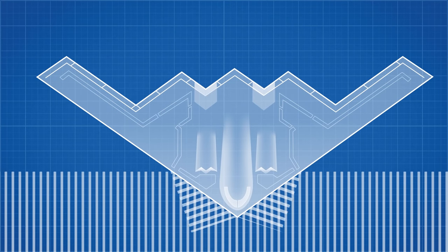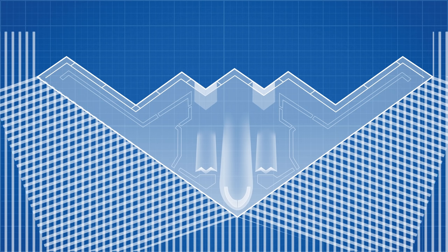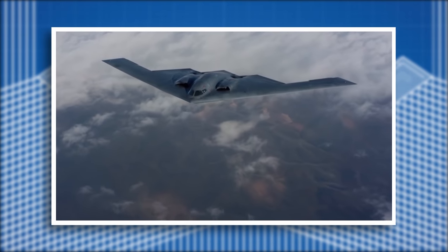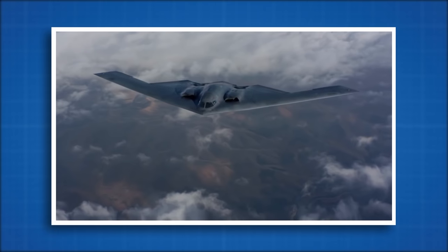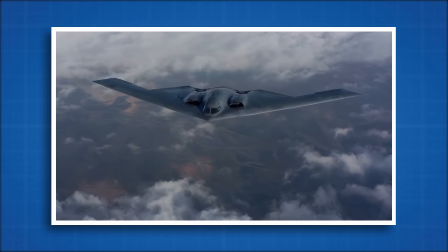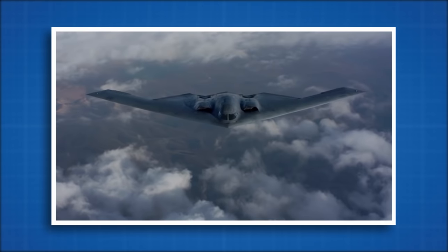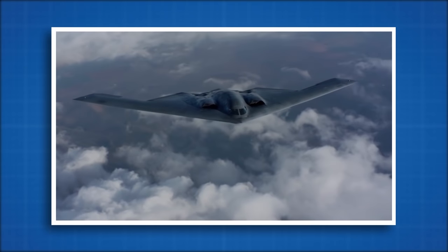The core concept behind the B-2 is reflection. It was designed to reflect radio waves away from the source so that they never get the chance to be detected. Every surface of the B-2 has been designed with this in mind. The aircraft was designed with the aid of computational models and a supercomputer, which resulted in an incredibly complex curved shape.